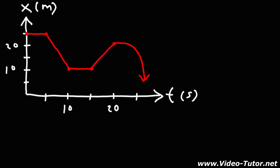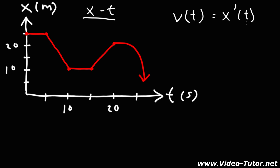In this video, we're going to talk about how to calculate the velocity from a position-time graph, also known as an xt graph. The velocity function can be found by taking the derivative of the position function. When you take the derivative of a function, you can calculate the slope of the tangent line at any point. So because velocity is the derivative of the position function, the velocity can be determined by taking the slope of the position function.